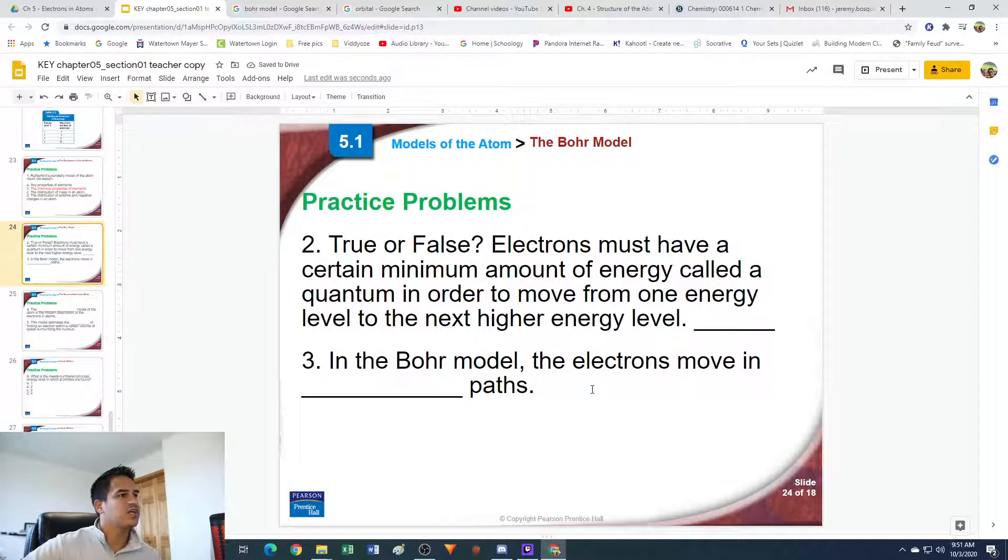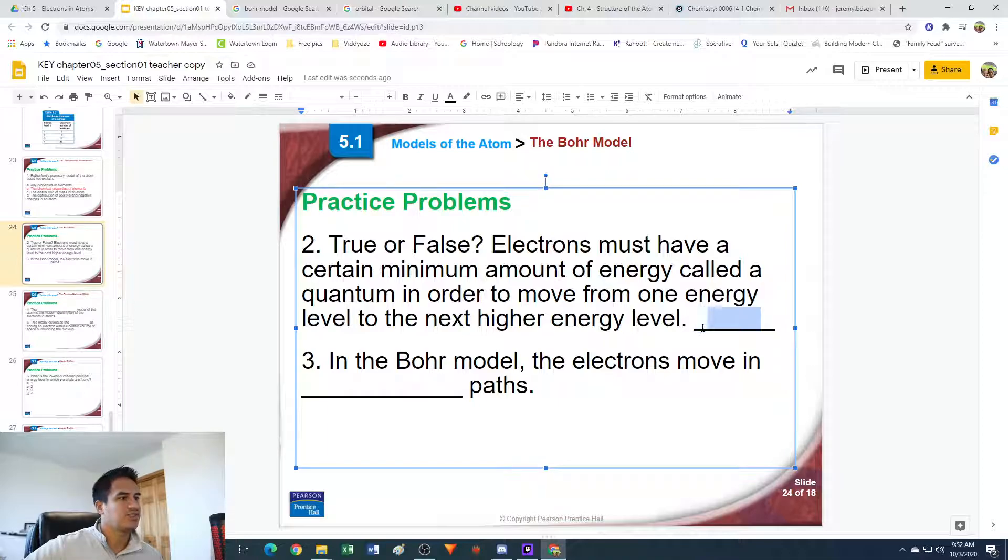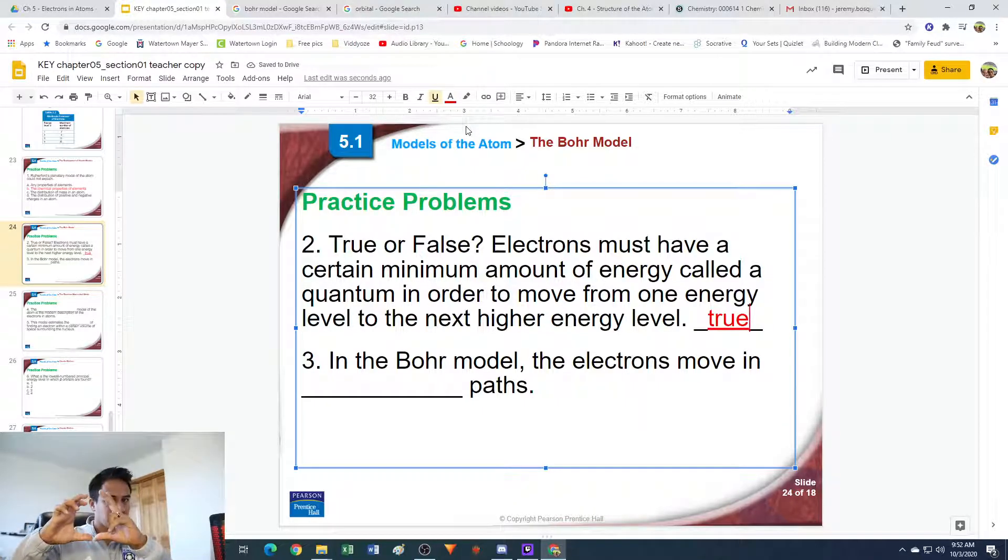Number two. True or false: electrons must have a certain minimum amount of energy called a quantum in order to move from one energy level to the next higher energy level. Yeah, that is true. This was determined by Niels Bohr, who basically said that they need to absorb a specific amount of energy to jump from the first energy level, which is like a circle this big, to the next energy level, which is like a circle this big.